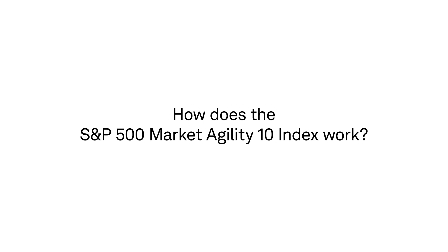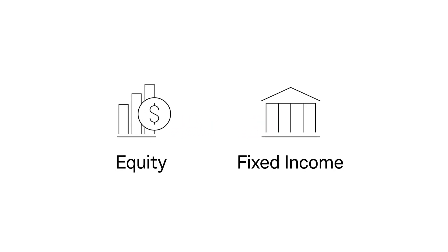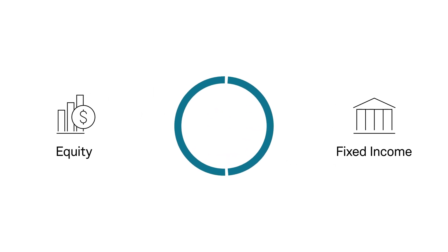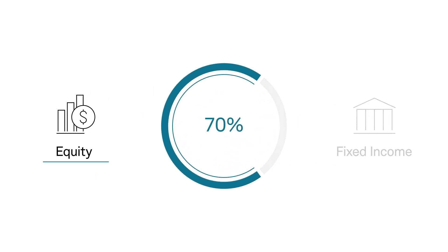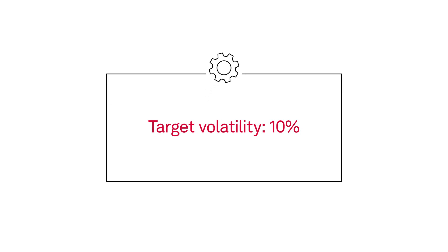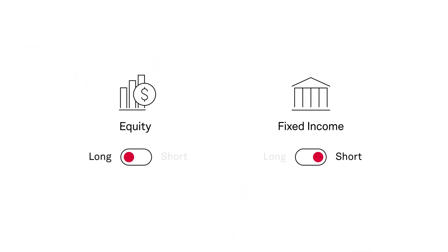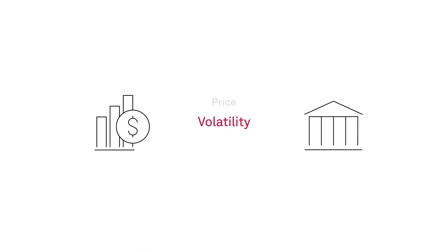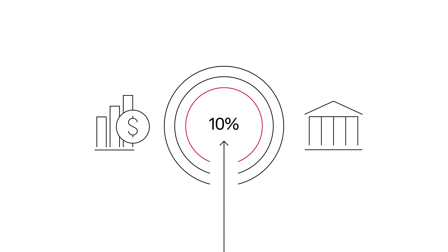How does the S&P 500 Market Agility 10 Index work? The index has two components: equity and fixed income. The S&P Market Agility 10 Index allocates its equity component at 70% and the fixed income component at 30%, then applies an additional risk control mechanism that targets a volatility of 10%. The index dynamically manages its allocations to the underlying equity and bond components by incorporating price, volatility, and momentum trends as it seeks to maintain a target volatility of 10%, regardless of the prevailing interest rate environment.